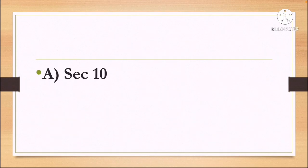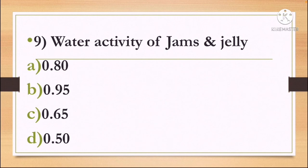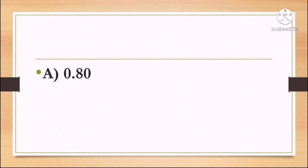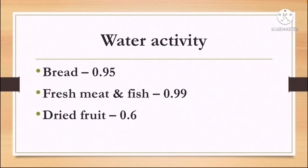Next question: water activity of jams and jelly — Option A: 0.80, Option B: 0.95, Option C: 0.65, and Option D: 0.50. The correct answer is Option A, 0.80. Water activity of bread is 0.95, fresh meat and fish is 0.99, and dried fruit is 0.60.